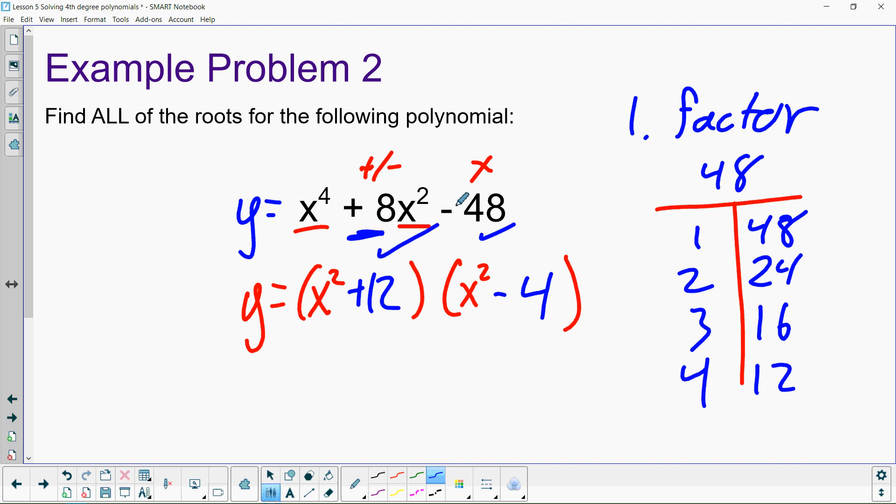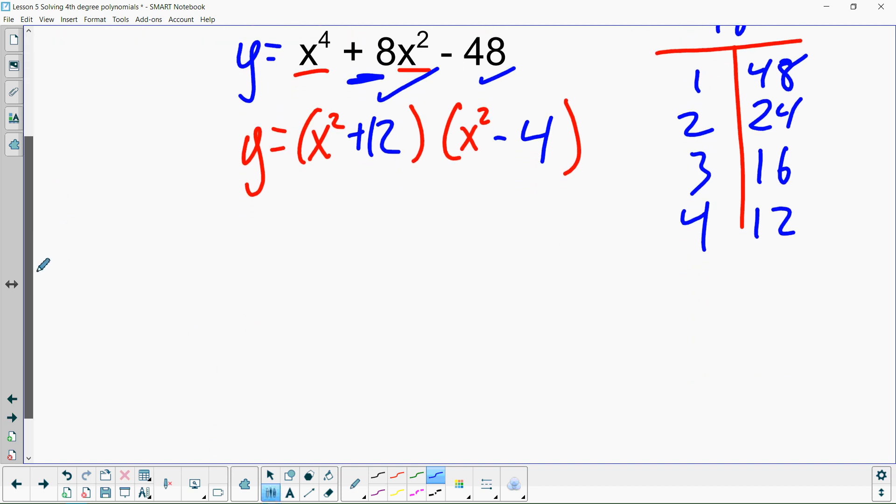Now, we take our two factors, set them equal to zero, and solve for x. So, x squared minus four equals zero. Step one of solving for x. Subtract 12 on both sides. These cancel. x squared equals negative 12.